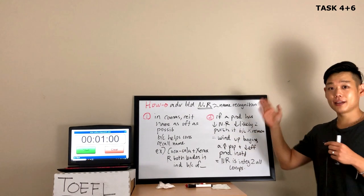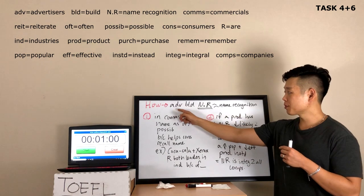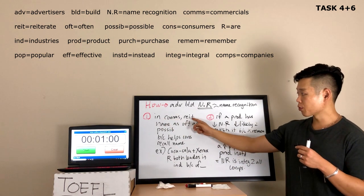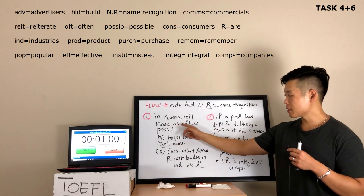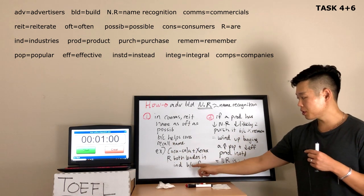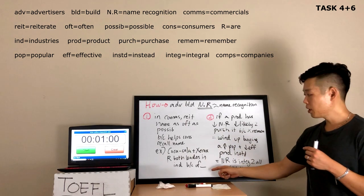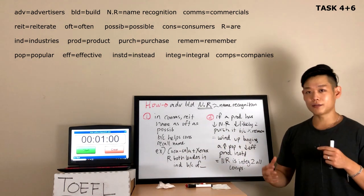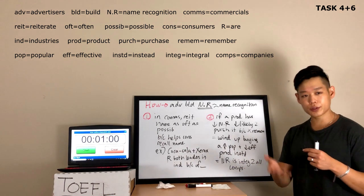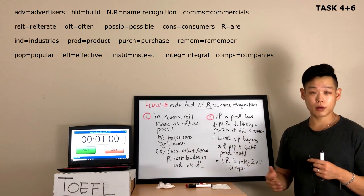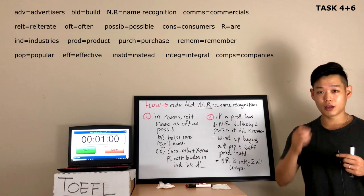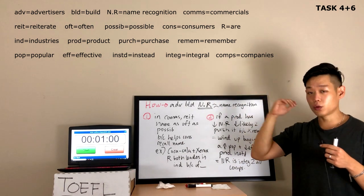Let's take a look at the board and the words that I actually wrote down. 'How advertisers build name recognition' — this is the beginning and ending sentence. In commercials, reiterate — reiterate means repeat — the name as often as possible because it helps consumers recall the name. For example, Coca-Cola and Xerox are both leaders in their industries because of their name recognition. In this example, the professor said a lot of unnecessary things. Like, when you wanted any cola, you just say 'I want a Coca-Cola' — that doesn't make sense. The professor should have said 'when you want any soft drink or maybe any soda,' not 'any cola.' Just ignore it.